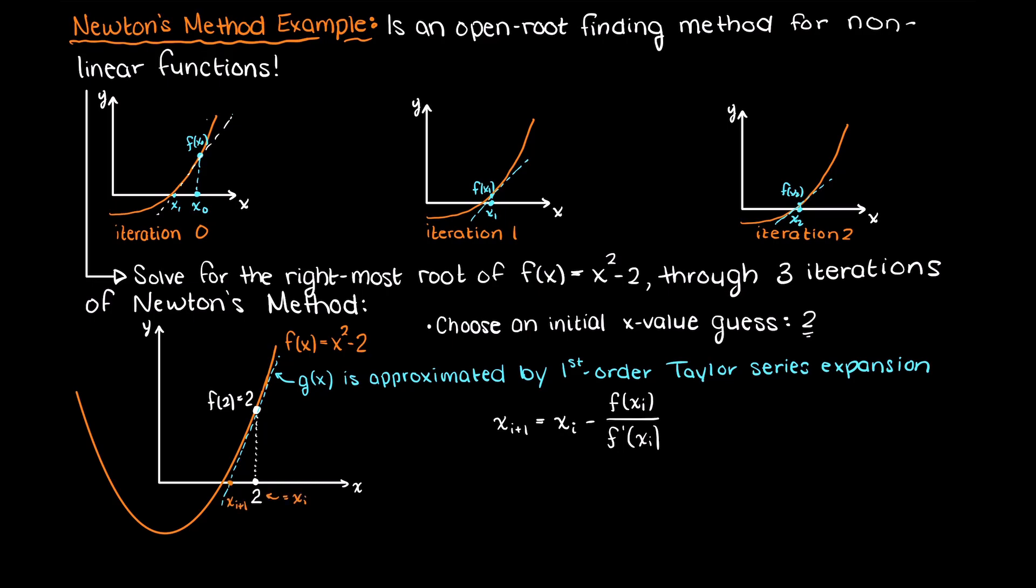So, we can first evaluate our function for our initial x guess. This is equal to 2. And as you can see from the equation, we also need to know the derivative of our function. The derivative of x squared minus 2 is simply 2x.